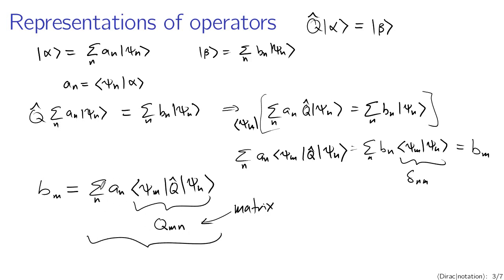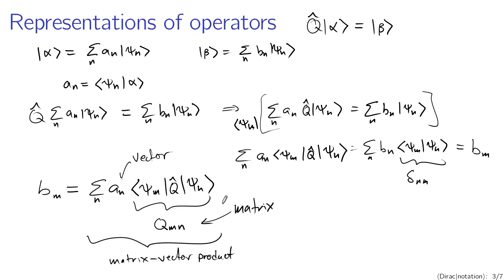This is a matrix — a table of numbers. In this case it's an infinity-by-infinity matrix, but it can still be thought of as a matrix. A sum like this, summing over n, where q sub m n is a matrix and a sub n is a vector, is a matrix-vector product. Instead of having to think about arbitrary quantum mechanical states in an infinite-dimensional Hilbert space, you can think about matrices and vectors — and there is a massive computational machinery for working with matrices and vectors: eigenvalues, eigenvectors, expansions, change of bases.